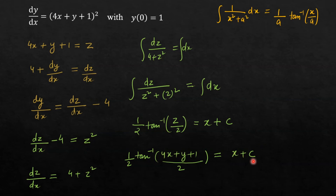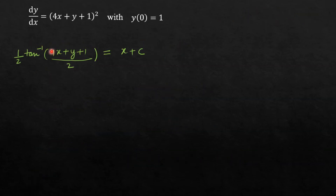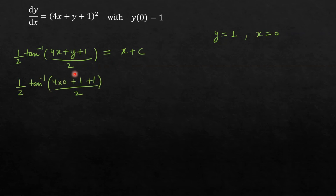Now we can find the value of c because we have been given an initial condition. It is given that the value of y is equal to 1 when x is equal to 0. So let us put these values into this equation to get the value of c. Put x equal to 0 and y equal to 1.